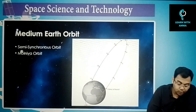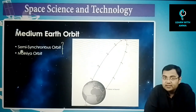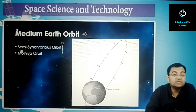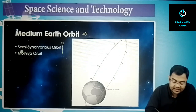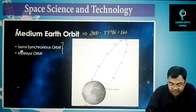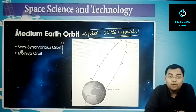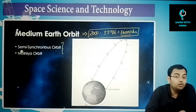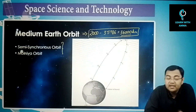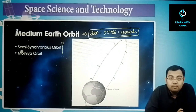After low earth orbit, we have medium earth orbit. The altitude range for medium earth orbit starts from approximately 2000 kilometers and goes up to 35,786 kilometers — roughly 36,000 kilometers. There are two particularly important types of orbits in this range.